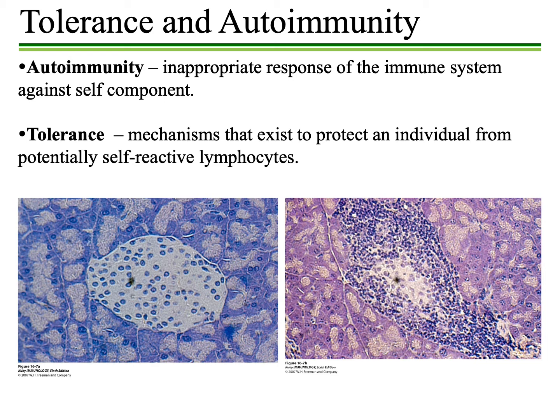Let's look at tolerance and autoimmunity in a little more detail. Autoimmunity is a type of dysfunction — a problem in the ability to distinguish self from non-self. This happens when there is a failure of what is known as tolerance. Tolerance is a mechanism, or series of mechanisms, that allows for protection from potentially self-reactive lymphocytes.